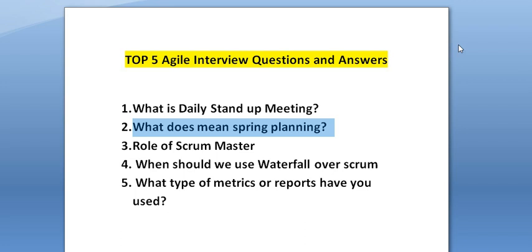The next question is: what is the meaning of a sprint planning meeting? In sprint planning, the product owner represents the goal of the sprint and discusses the high-priority product backlog items — that means what tasks need to be achieved, prioritized by the product owner. The delivery team then chooses the amount of work for the next sprint from those product backlog items chosen by the product owner.